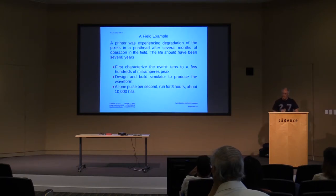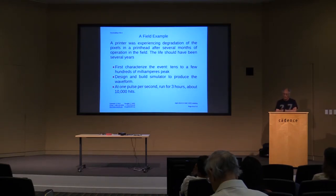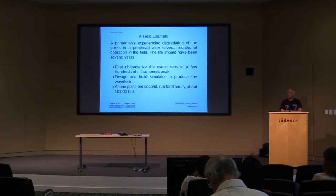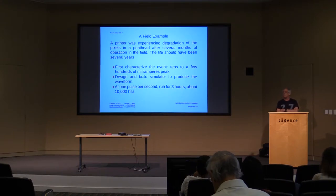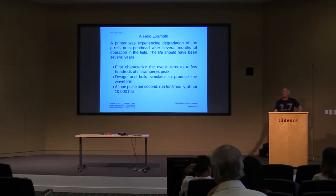Here's a field example. This printer was working great for about three months, then slowly pixels started to go bad in the print head — it should have lasted several years. They weren't quite sure what was happening. I had never seen ESD cause gradual degradation — it usually kills the device or it doesn't. The failures all began at about three months simultaneously.